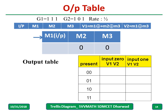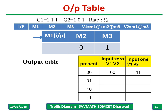Now for the output table, v1 is obtained by XORing all three bits and v2 by XORing the first and last bits. When present state is 00 and input is 0: v1 = 0, v2 = 0, so output is 00. When input is 1: v1 = 1, v2 = 1, output is 11. When present state is 01 and input is 0: XORing gives output 11. When input is 1: output is 00, since mod-2 addition gives 1+1 = 0.